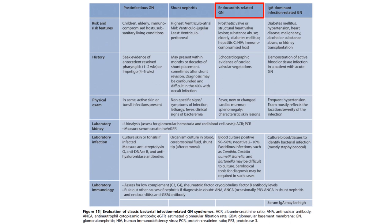Regarding endocarditis-related GN: it is more common in patients with prosthetic valves, structural heart disease, substance abuse, and immunocompromised states such as HIV, poorly controlled diabetes, and similar conditions. Echocardiography will help with diagnosis. Physical examination will show the classic features of endocarditis: skin lesions, splenomegaly, cardiac murmurs, and fever. For diagnosis, blood culture is positive in approximately 90–98% of cases.